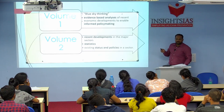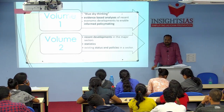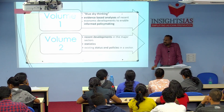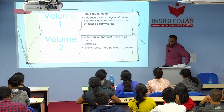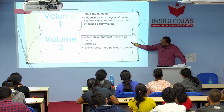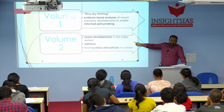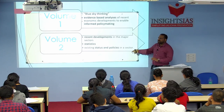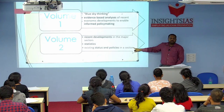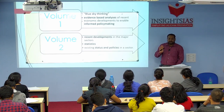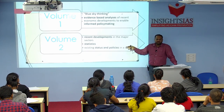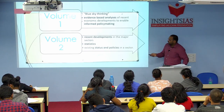Volume 2 talks about recent developments in major sectors of the economy — primary, secondary, and tertiary, including industries and infrastructure. It presents statistics for the financial year gone by: what happened, what was the data, what is the existing status and challenges. It does not give a comprehensive picture of all sectors — for example, if they mention tourism, they cover only four or five areas, not everything.